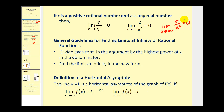The general guideline for finding limits at infinity of rational functions is to divide each term in the argument by the highest power of x in the denominator, then simplify, and then we should be able to find the limit at infinity in this new form. It's also true that if these limits equal L, then y equals L would be a horizontal asymptote, which is helpful when analyzing the graph to evaluate the limit.